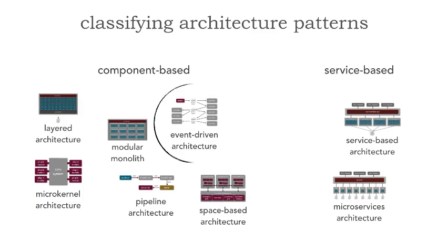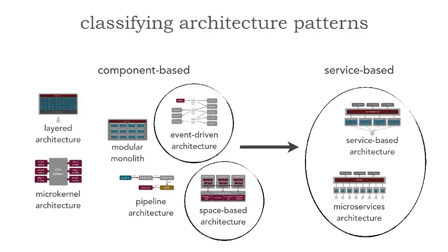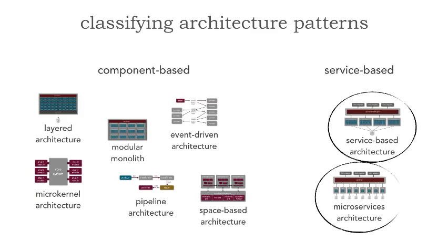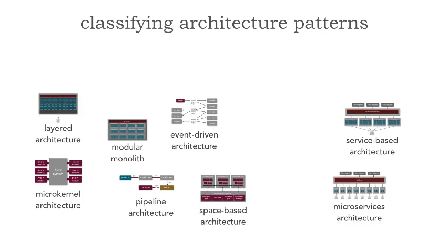There seem to be a little bit of odd things happening, because event-driven architecture and even space-based architecture tended to share some of the characteristics of service-based architecture and microservices. And by the same token, even service-based architecture and microservices still utilize components — they're still built using components as building blocks, particularly space-based. So this quickly fell apart. When you're building a taxonomy, you want to find a really good seam between the different kinds of things you're trying to classify.